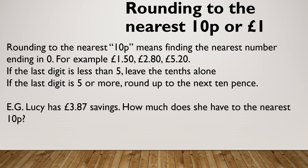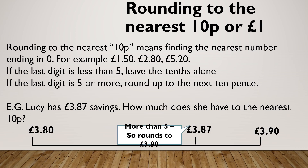For example, Lucy has £3.87 savings. How much does she have to the nearest 10 pence? Because that's a 7, it's 5 or above, so it's going to round to £3.90. If that had been £3.84, it would have rounded to £3.80. If I was rounding £7.42 to the nearest 10 pence, that would be £7.40 because it is a 2 — it's 5 or below. One more example: if I was rounding £11.91, it would stay as £11.90 because of that one.